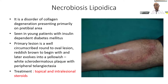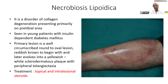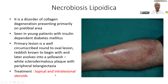Necrobiosis lipoidica usually appears on the lower extremity on the shin — you get a circular plaque with an active border and sclerosed center. This differentiates it from tinea. Central atrophy with a sclerosed border is characteristic. Treatment is intralesional steroid or topical steroid.